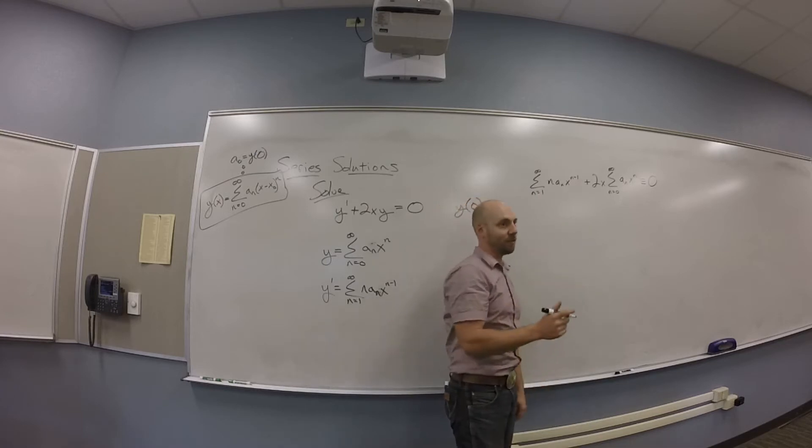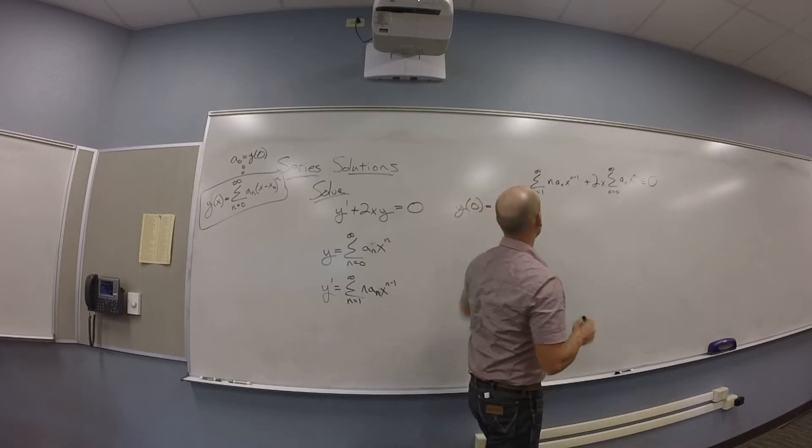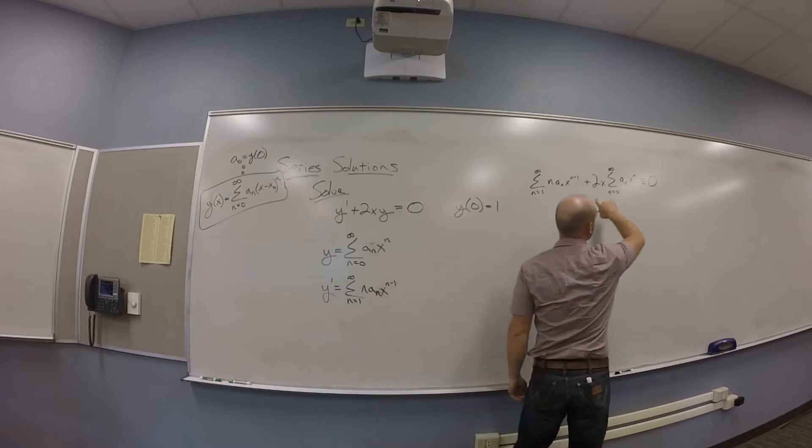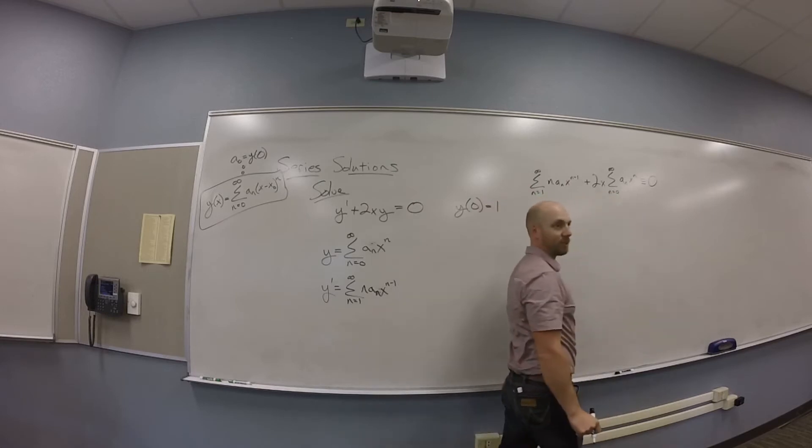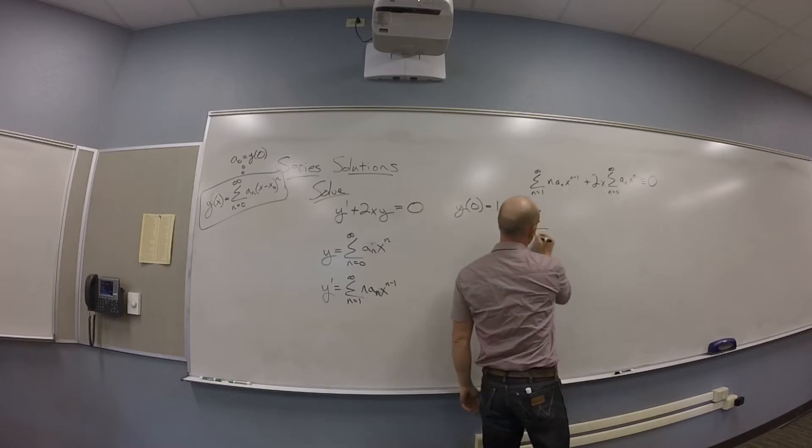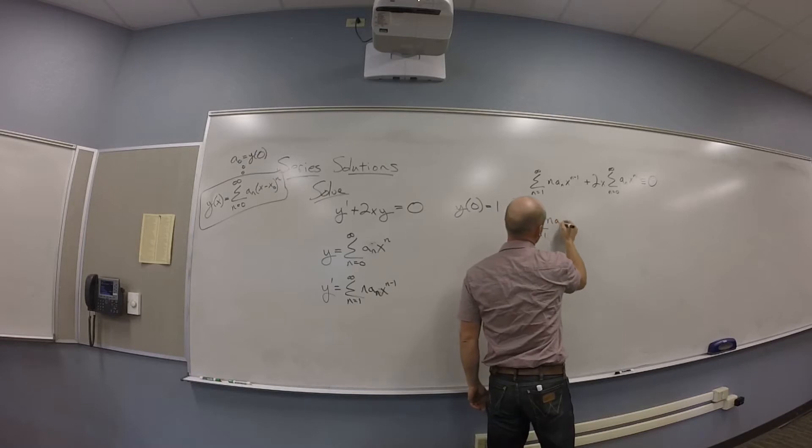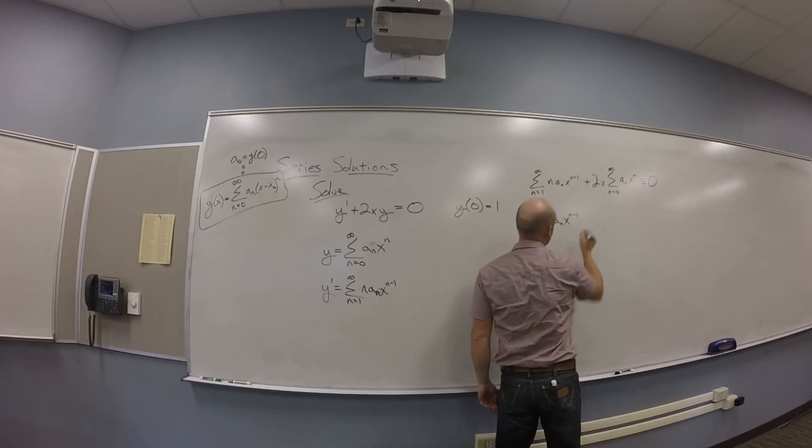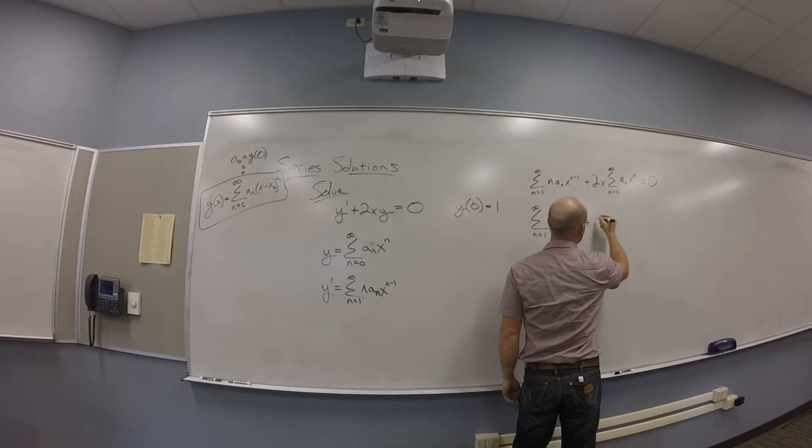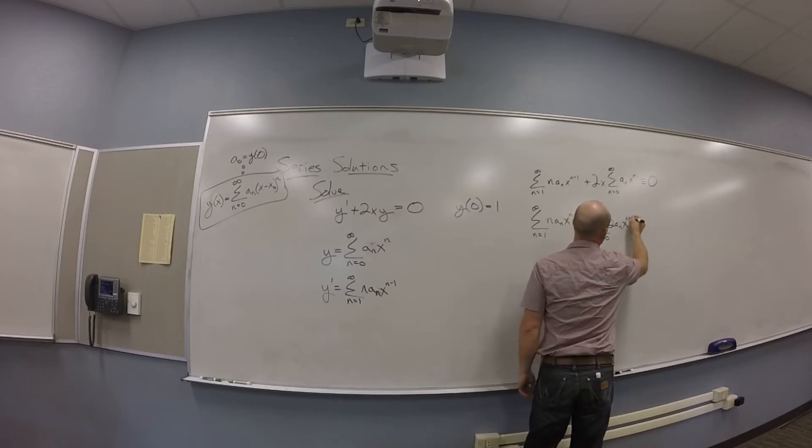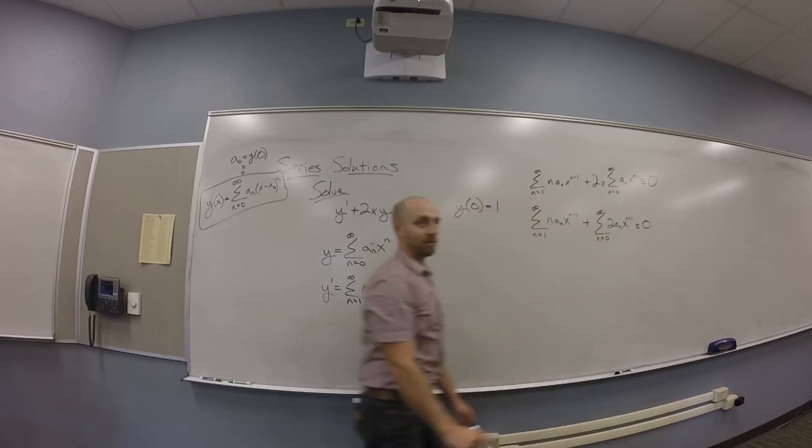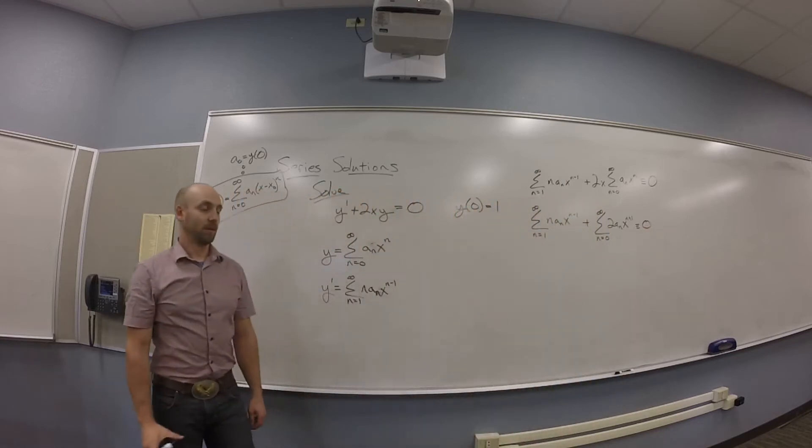So then I can bring the 2 and the X, which are constant with respect to this summation, into there. So I've got the sum from N is 1 to infinity of N A_N X to the N minus 1 plus the sum from N is 0 to infinity of 2 A_N X to the N plus 1. And this is supposed to be identically 0.